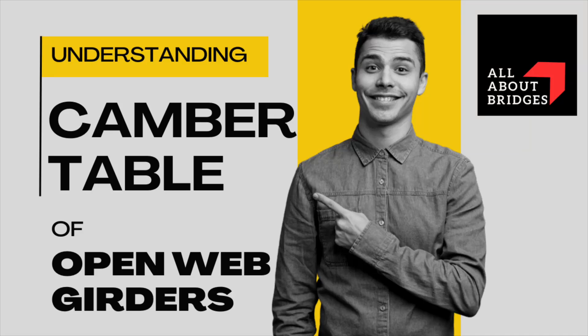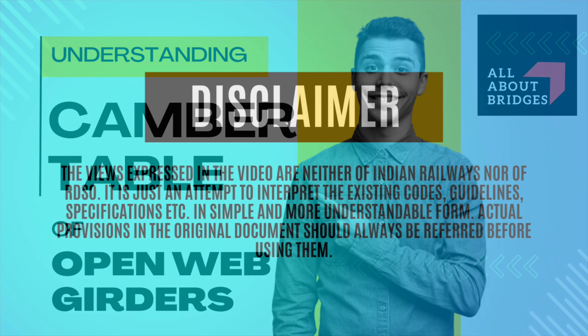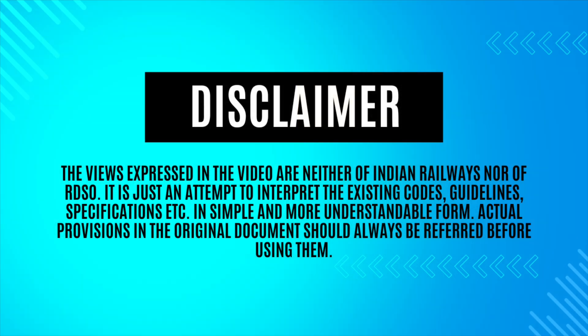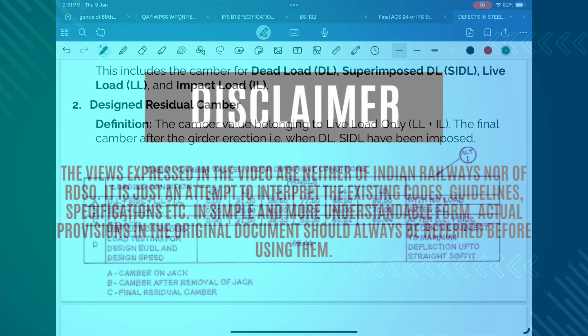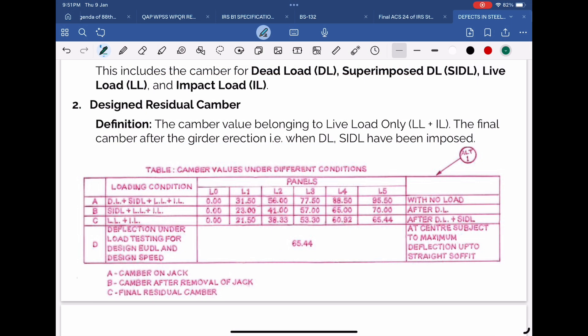In this video, we will try to understand the camber values given in RDSO standard drawings of open web girders. In all RDSO standard open web girder drawings, a table is given showing camber values under different conditions.